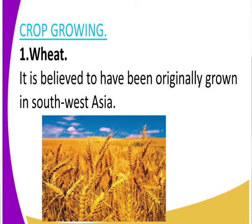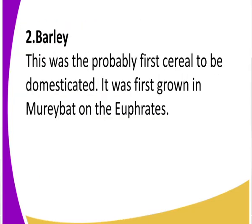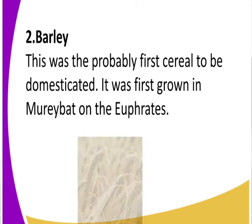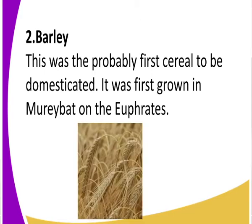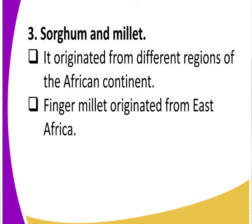Another crop that is believed to have been domesticated is barley. Barley is probably the first cereal to be domesticated. It was first grown in Muyabe Bat on the Euphrates River. You can see an image of barley there — it closely looks like wheat, so if you're not keen you might confuse barley and wheat. Barley was grown along the Euphrates River.